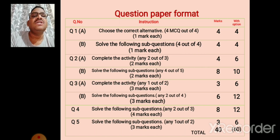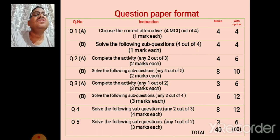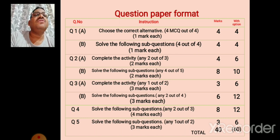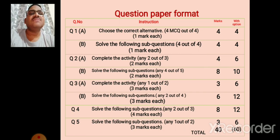Total marks for question number 4 is eight. Then question number 5, solve the following sub-questions: two sub-questions are given and you have to solve only one, three marks for each. Total marks for question number 5 is three. You have to write the question paper of 40 marks and the paper with options is of 60 marks.